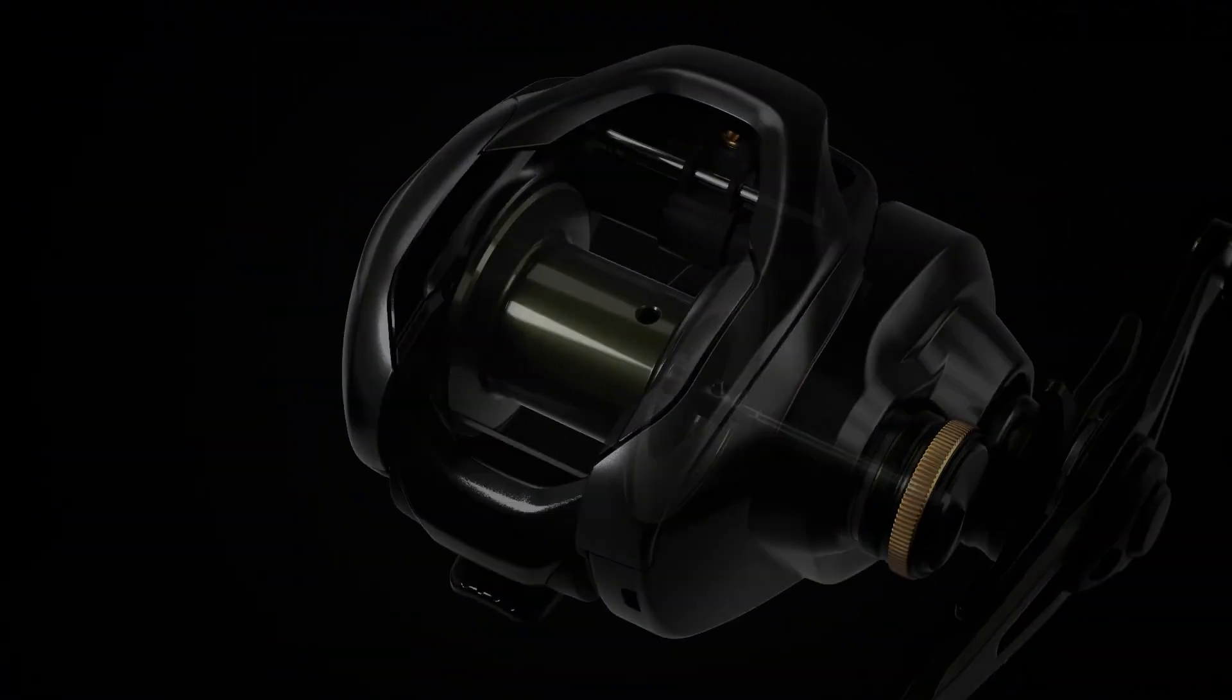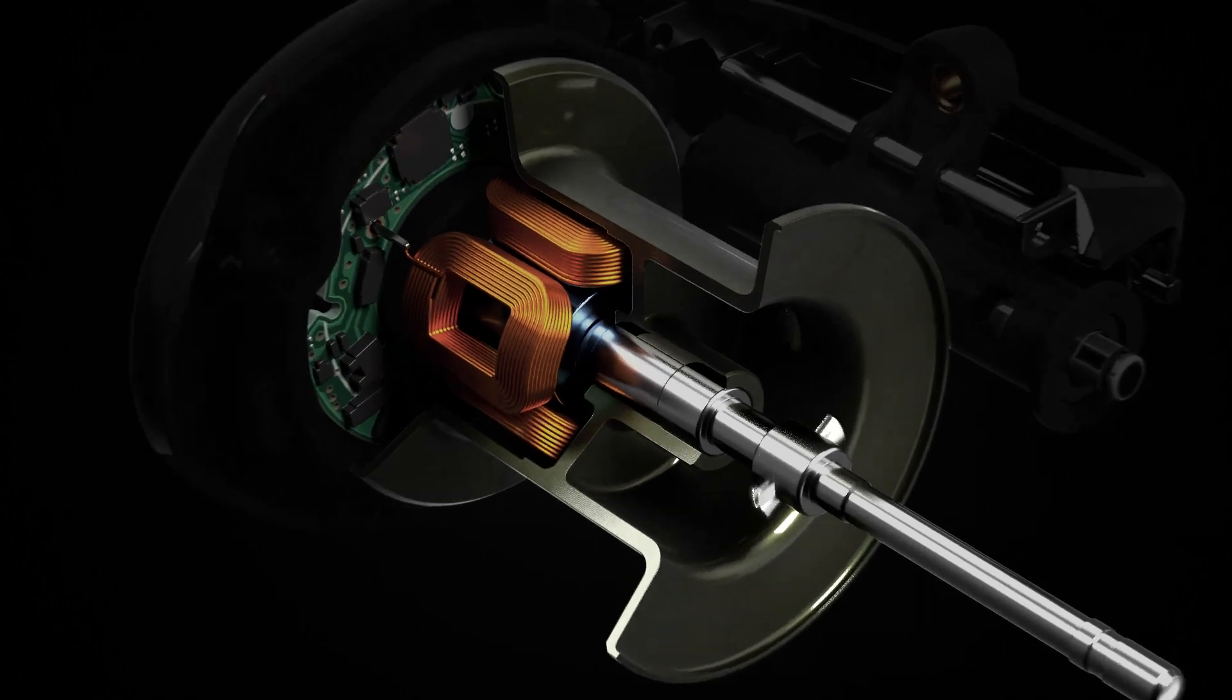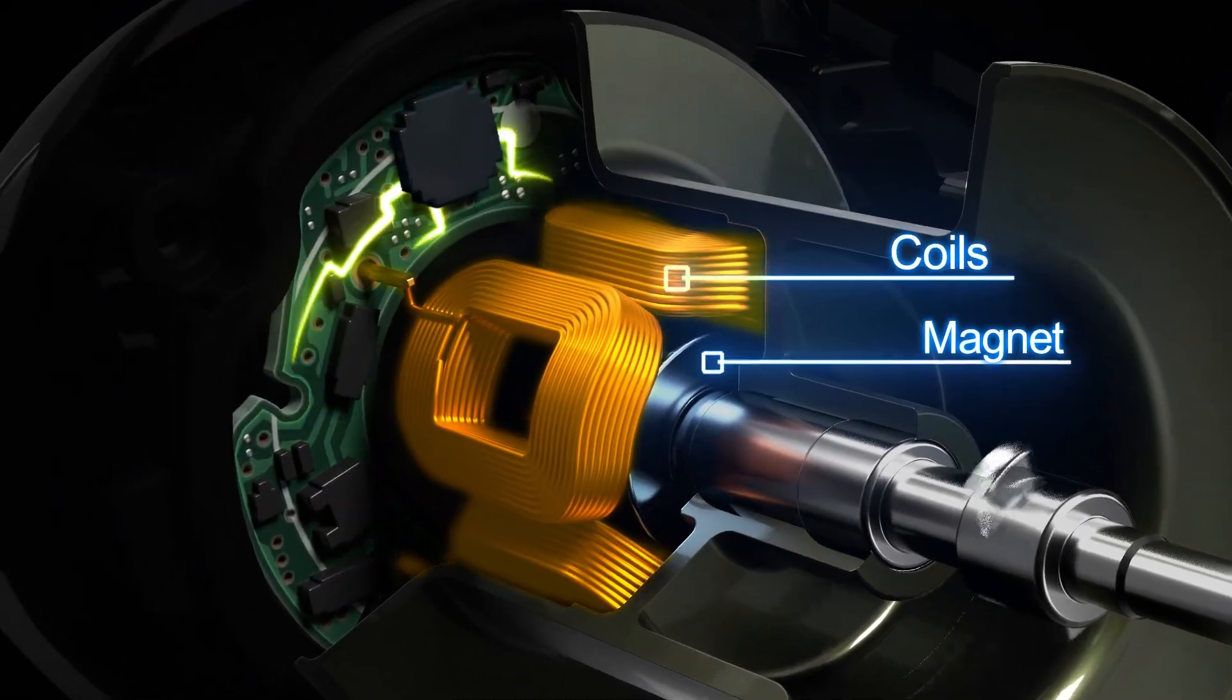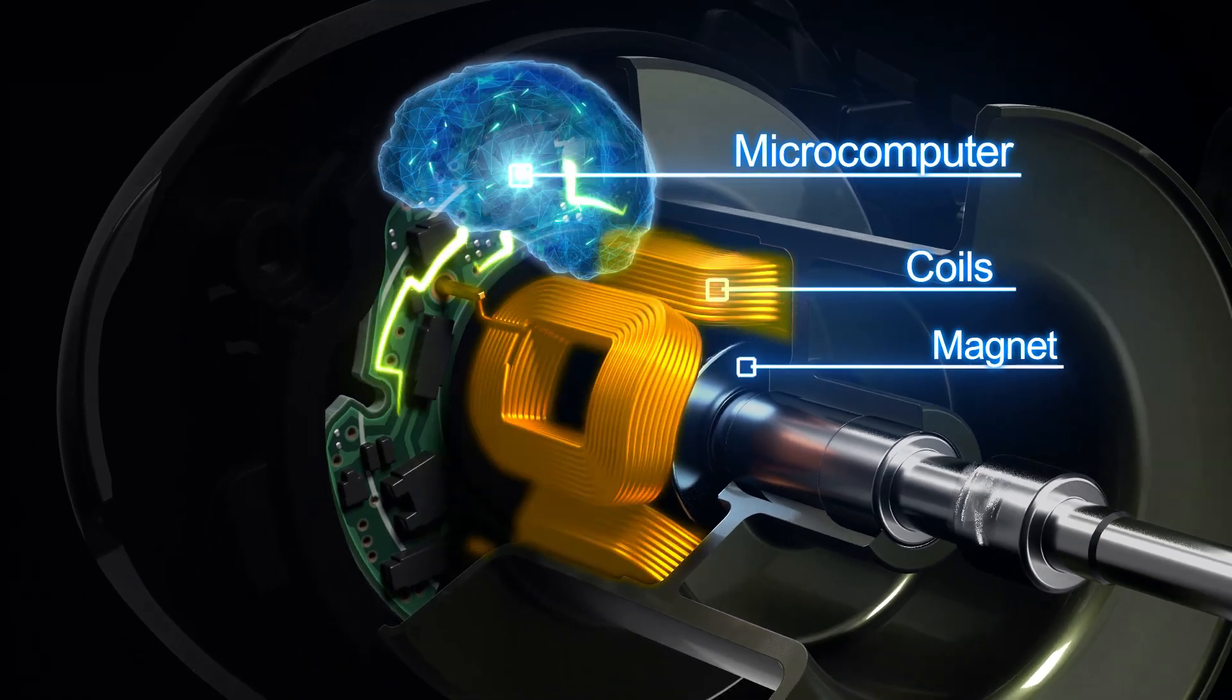Let's see the mechanism of DC Brake. When the spool starts to revolve, an electric current is generated through the coil. The intelligent microcomputer constantly measures spool speed and controls it to prevent backlash.